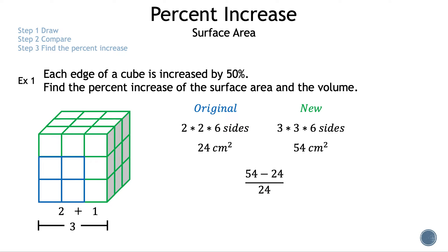To find the percent increase, we use the formula: (new − original) / original. So we have (54 − 24) / 24 = 30 / 24, which simplifies to 5/4. Converting that improper fraction to a decimal gives 1.25, and converting to a percentage gives 125%. The surface area of our new cube is 125% more than the original.